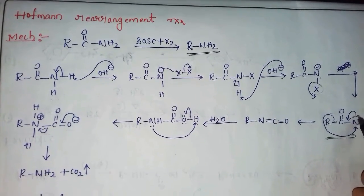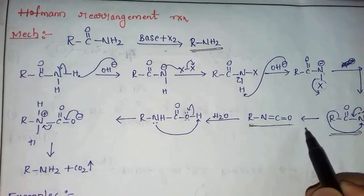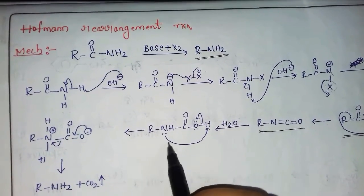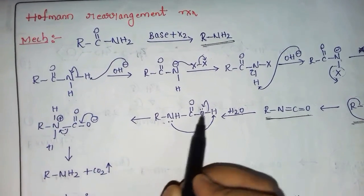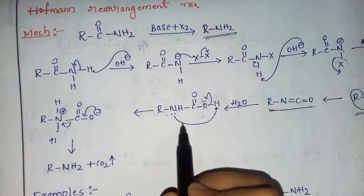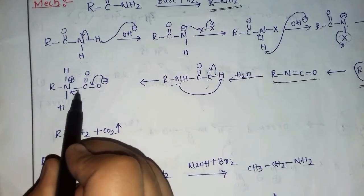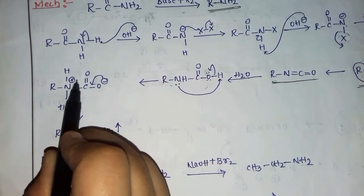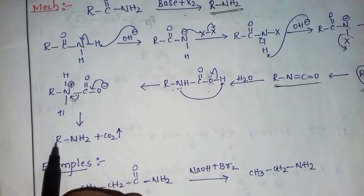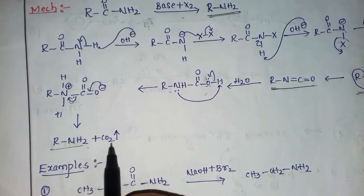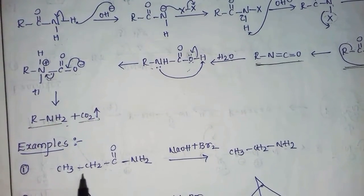This intermediate then undergoes alkyl migration — the lone pair shifts and we get isocyanate. Then with water the reaction proceeds: hydrogen is taken by the lone pairs, a negative charge shifts, and the bond rearranges because of the positive charge seeking neutralization. We get the primary amine along with release of CO2.